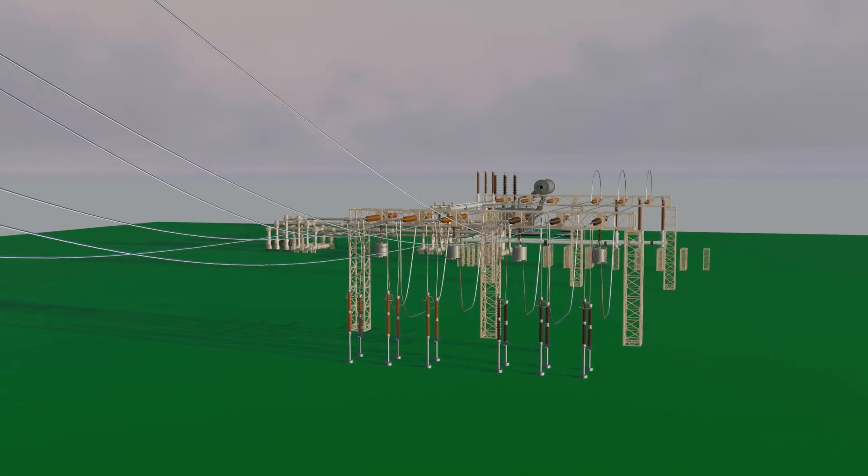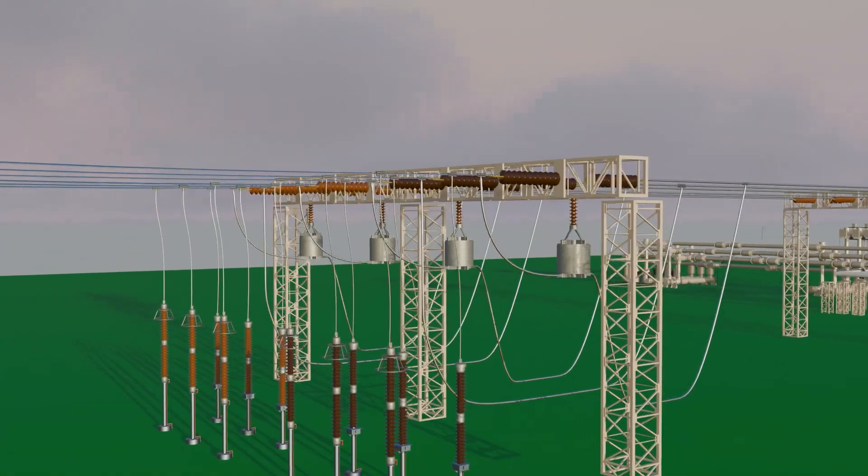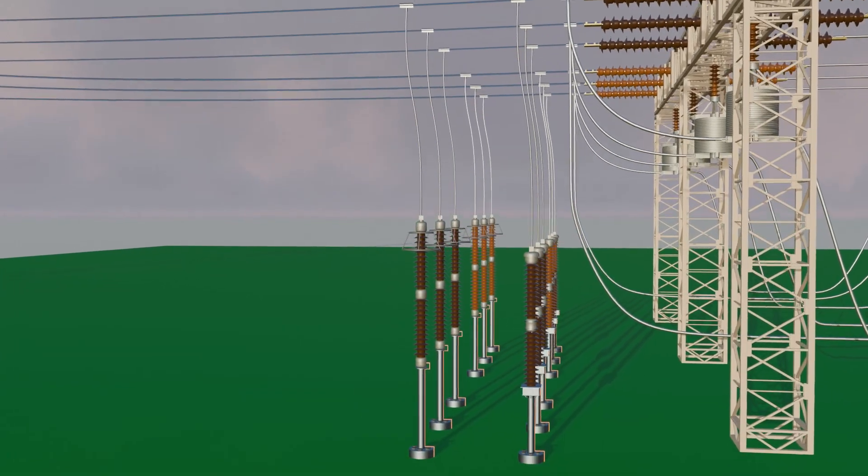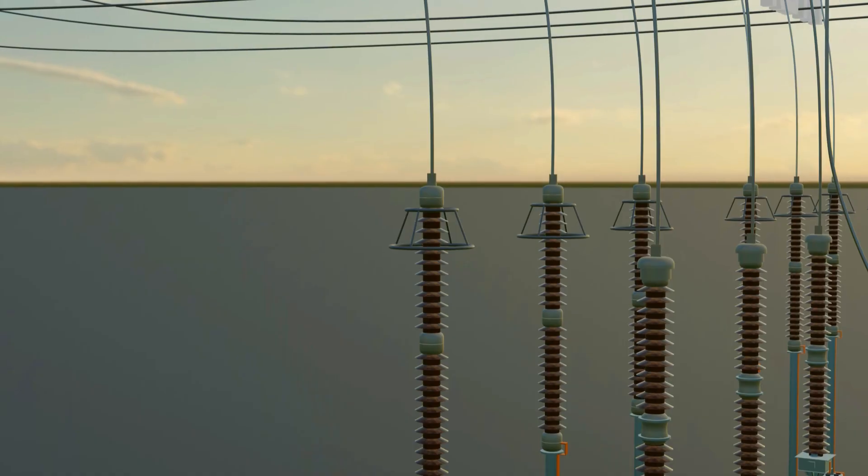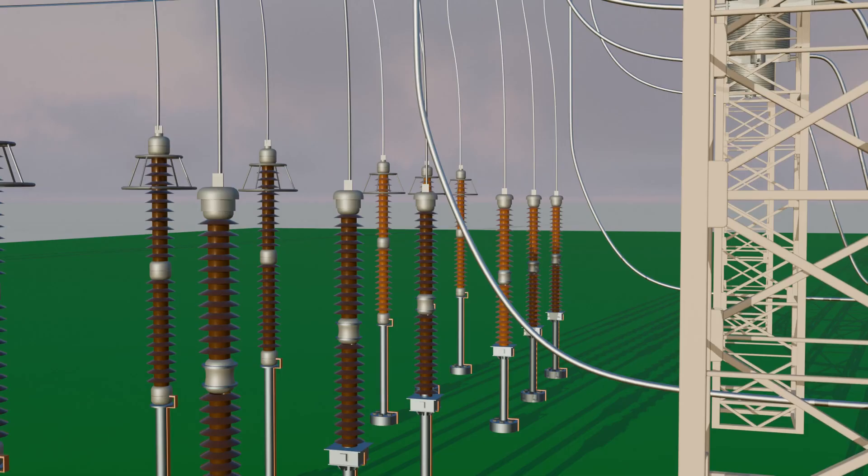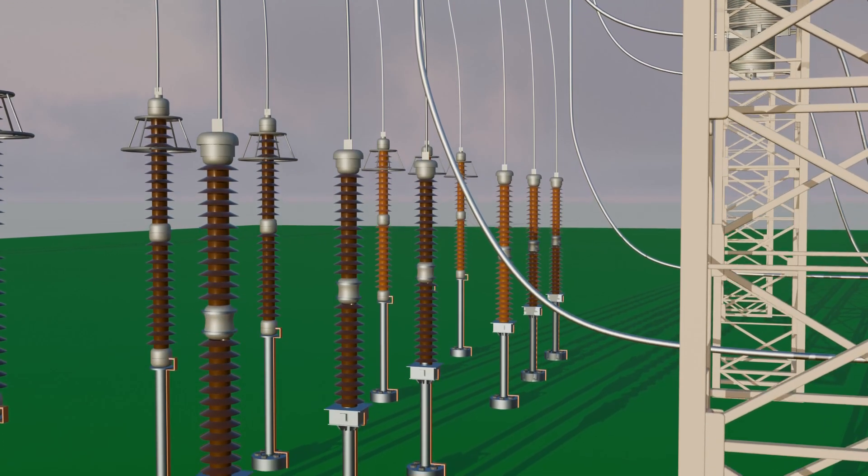Here a 400 kV transmission line is arriving and is terminated on a gantry tower. The first device connected here is a lightning arrestor. It provides a low resistant path for lightning strikes and overvoltage surges on the line, so the excess energy is safely diverted to earth. Next comes the CVT, the capacitive voltage transformer, which measures high voltage.